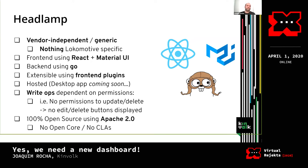So what is Headlamp, and where do we want to take it? It's a vendor-independent and generic dashboard — nothing in it is specific to Locomotive. The frontend uses React plus Material-UI, which lets you build UI with minimal effort. The backend is built with Go, which we use extensively at Kinfolk and which is widely used in the cloud-native ecosystem.